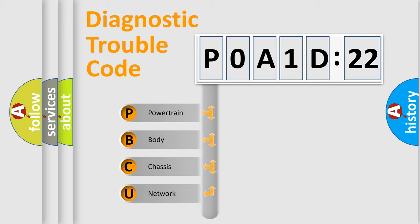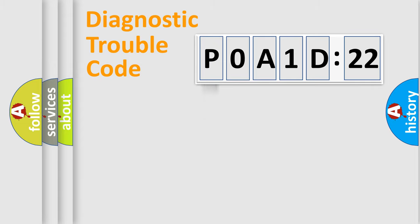If the second character is expressed as zero, it is a standardized error. In the case of numbers 1, 2, or 3, it is a more prestigious expression of the car-specific error.